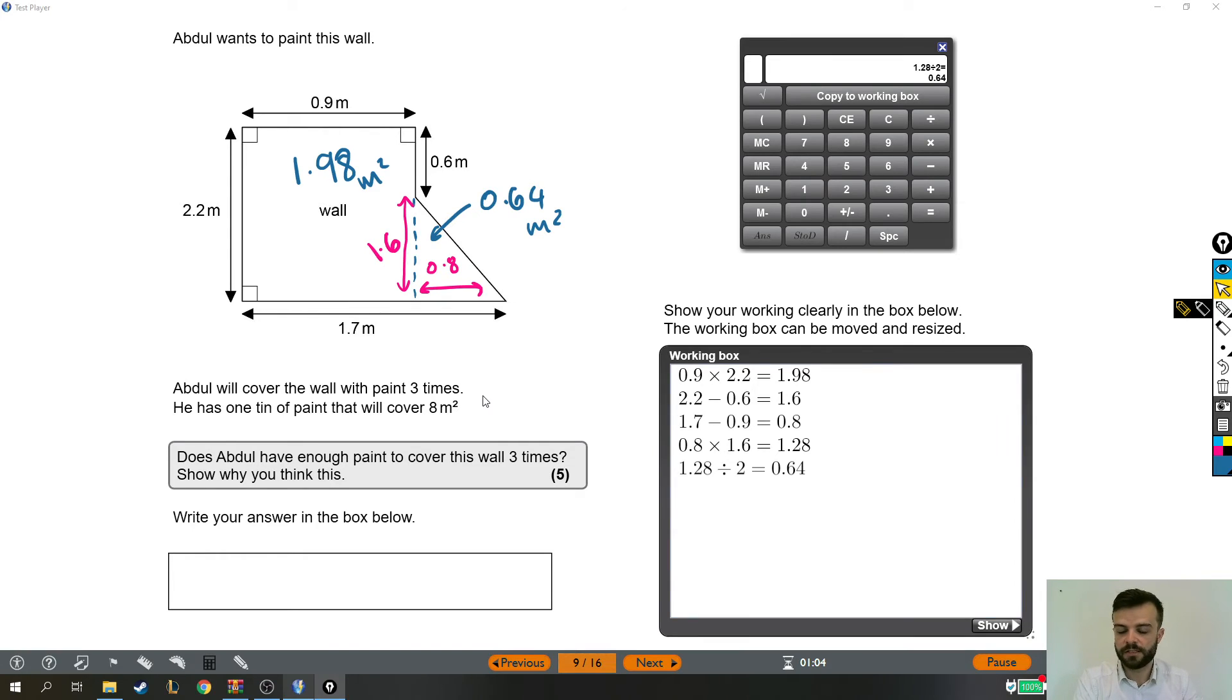So the area that he needs to paint when he paints this wall is going to be the area of the triangle plus the area of the rectangle. This number is the area of the entire wall. So total area is 2.62 metres squared.